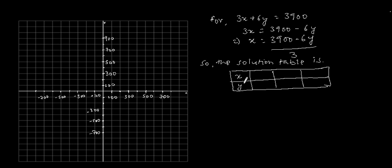By putting any random value for y, we need to find out the value of x. Suppose we put y = 500: 6 × 500 = 3000, so x = (3900 - 3000) ÷ 3 = 300.